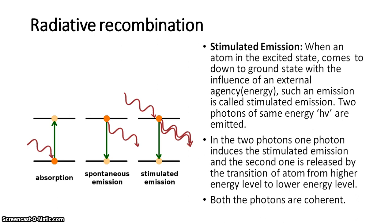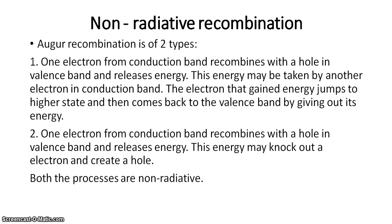In the case of radiative recombinations, the energy given out is in the form of photons, whereas in the case of non-radiative recombinations the energy given out is in the form of heat. Even in this case there is a transition from higher energy levels to lower energy levels.